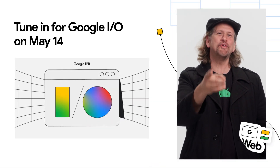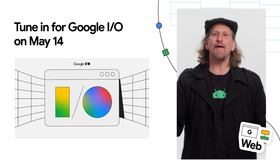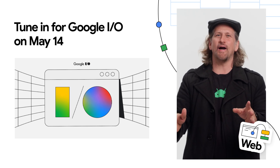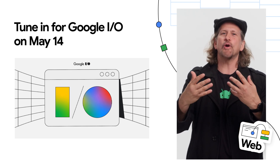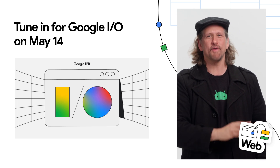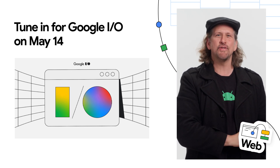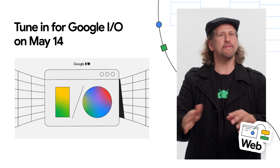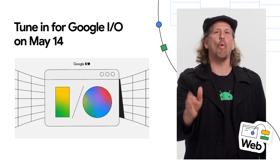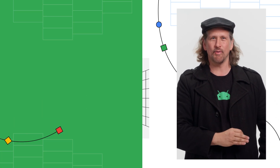Mark your calendars. Google I/O kicks off with live streamed keynotes on May 14th at 10 AM Pacific time. We'll be sharing what's new in mobile, web, and multi-platform development, how to scale your applications in the cloud, and how to incorporate the latest AI features across over 100 sessions, workshops, code labs, and demos.